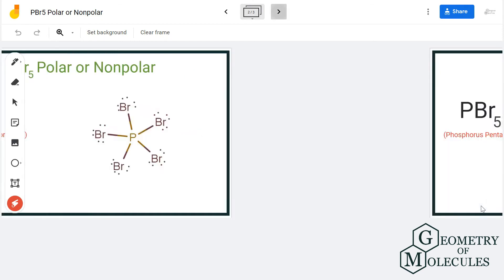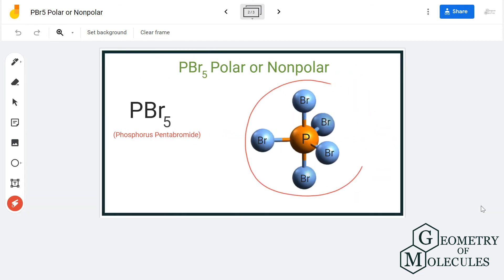also look at its shape. So here is the shape of PBr5, and it has a trigonal pyramidal geometry. All the bromine atoms are arranged quite symmetrically, and the distribution of electrons is also quite symmetric, so there are